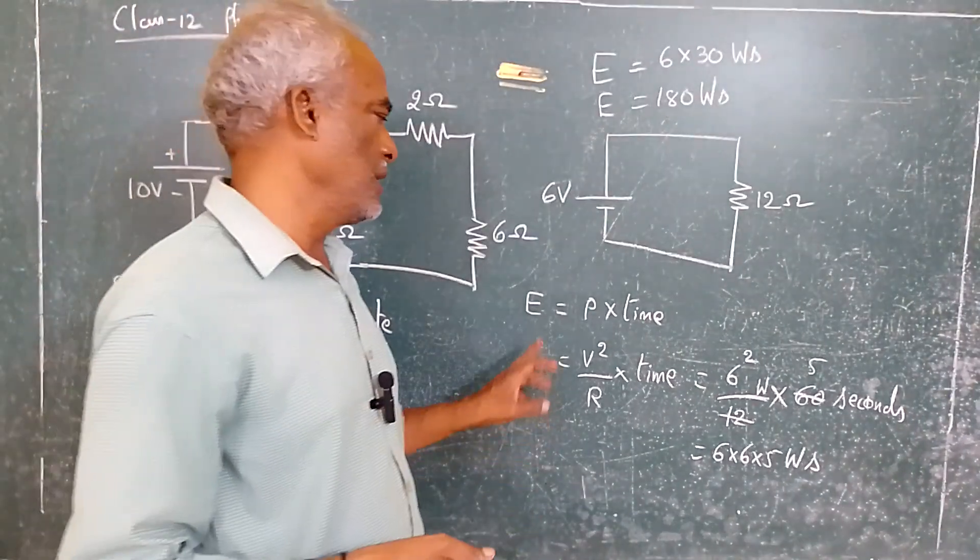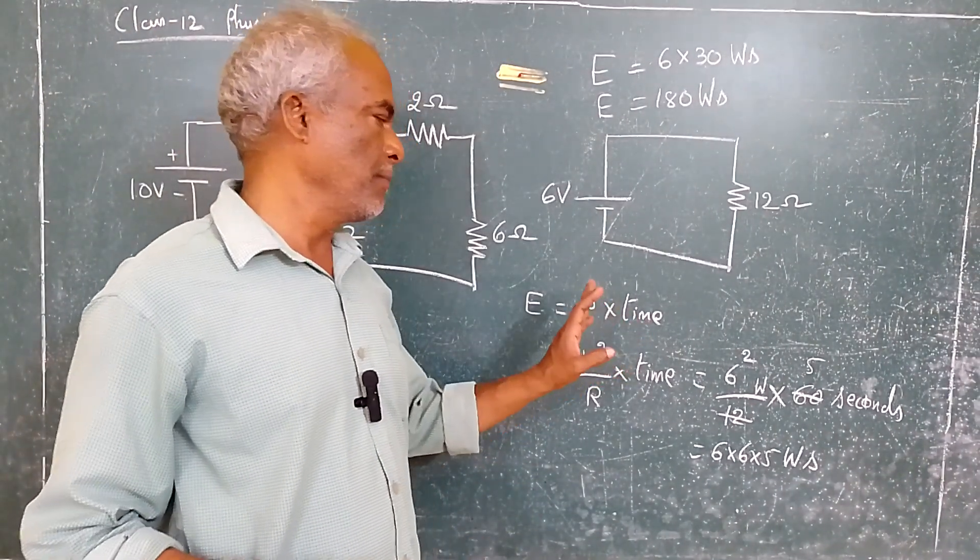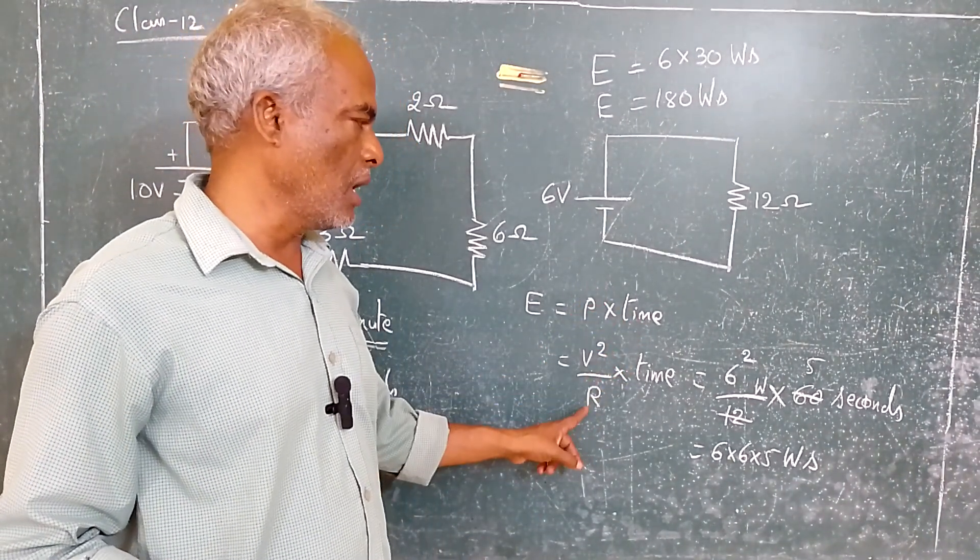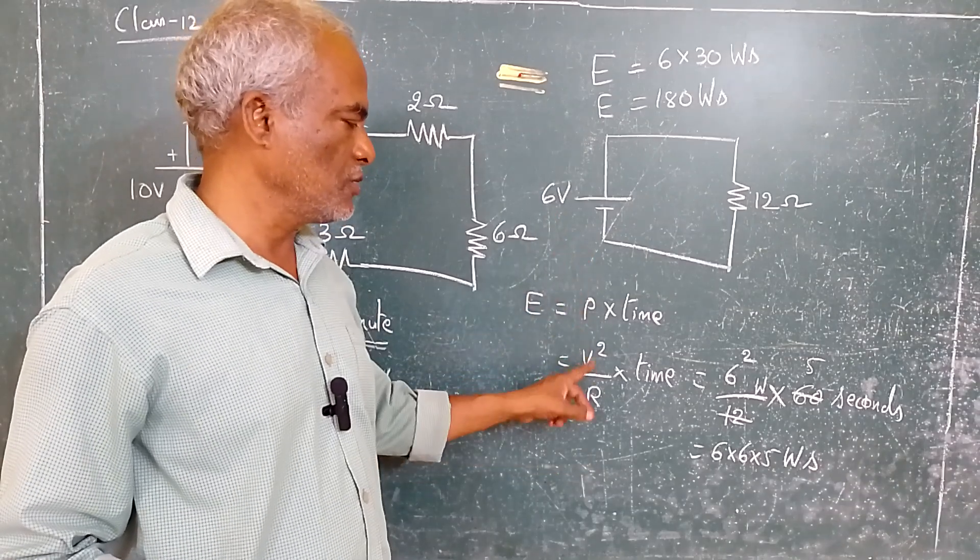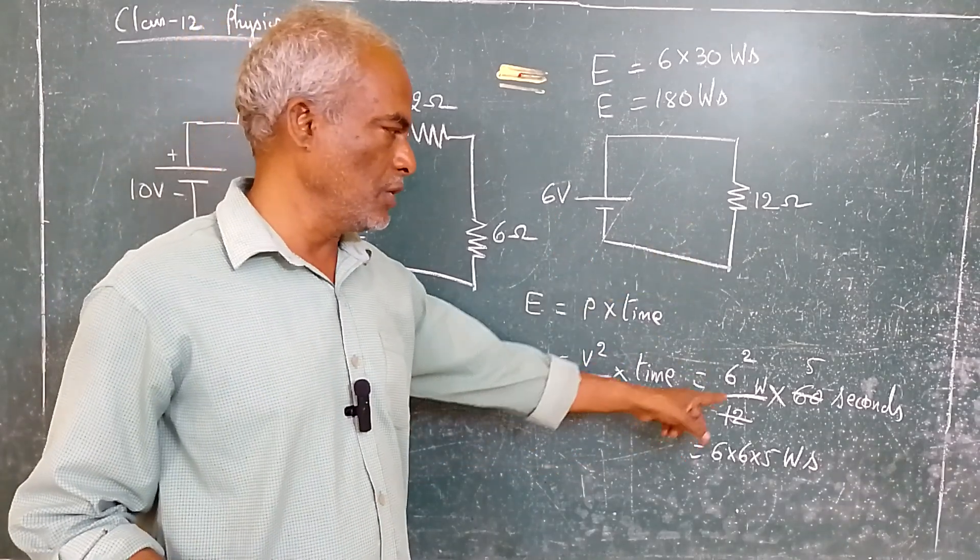For energy we know the formula, energy is equal to power into time. Power is V square by R. V is 6, 6 square by R, R is 12, the unit is watt.